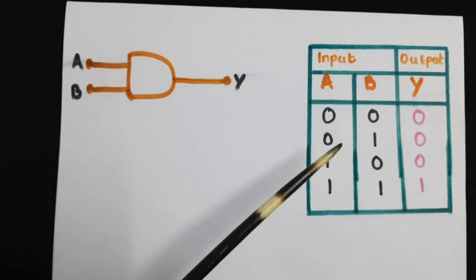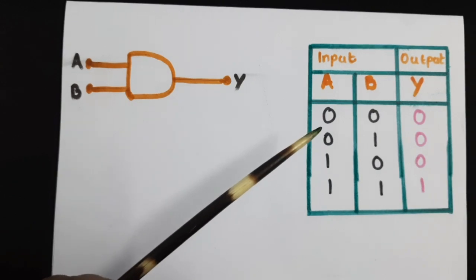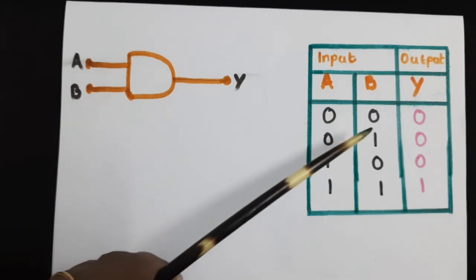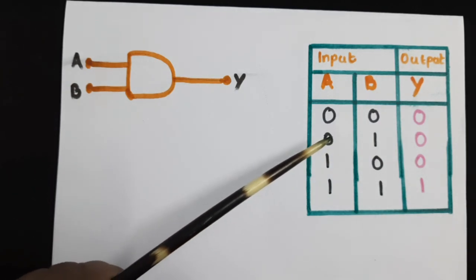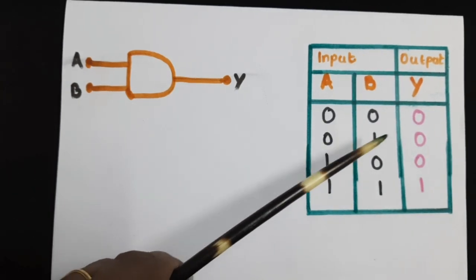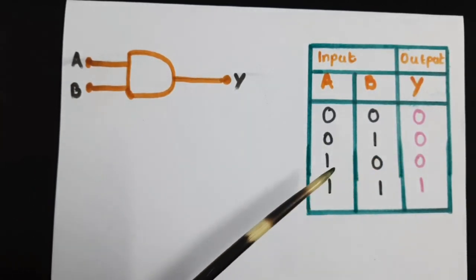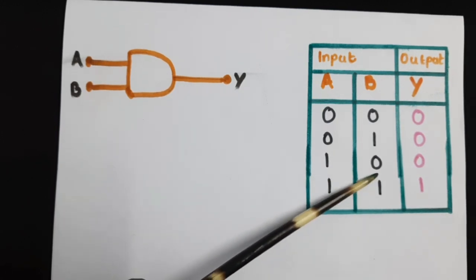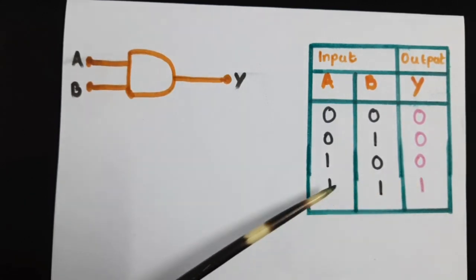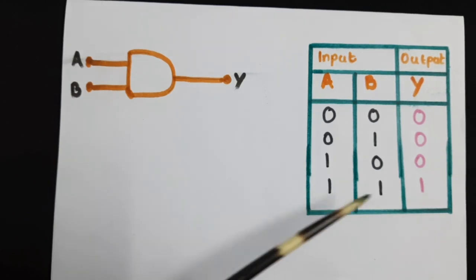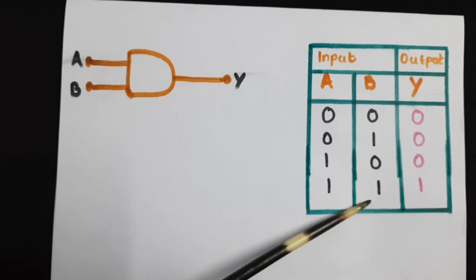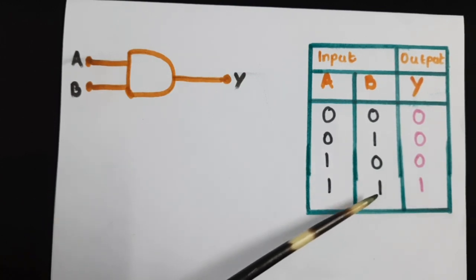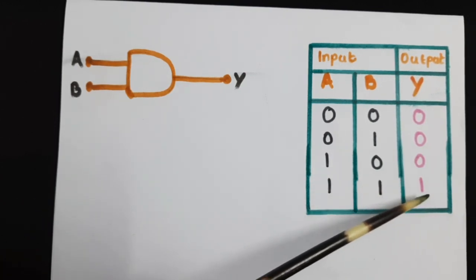This is the truth table for AND gate. When A is 0 and B is 0, output Y is 0. When A is 0 and B is 1, then also the output is 0. When A is 1 and B is 0, the output is again 0. When A and B are both high, then the AND gate gives a high output.